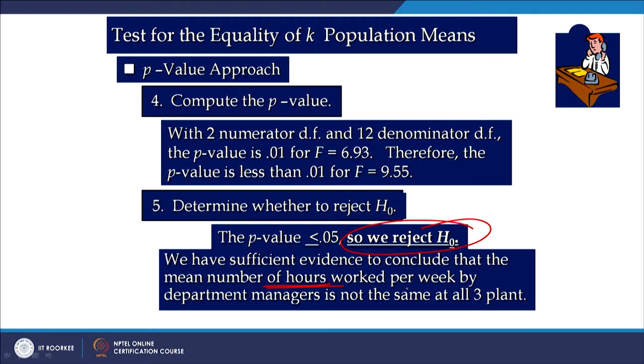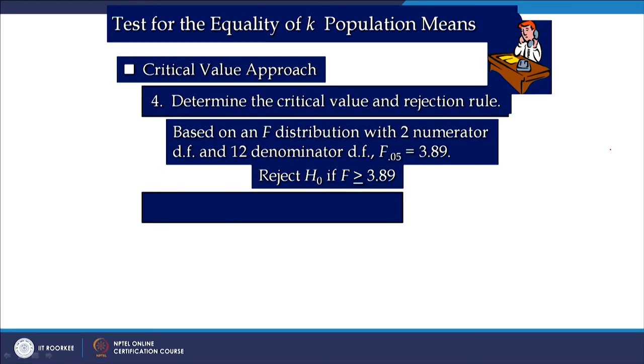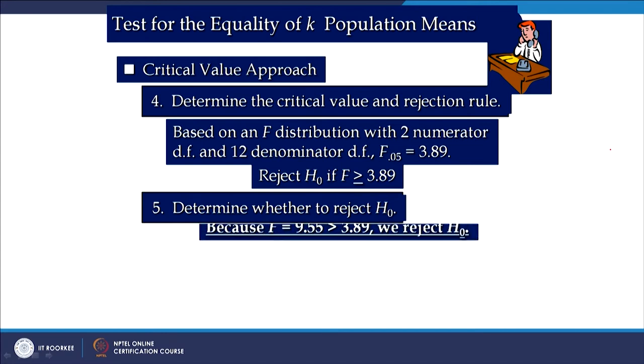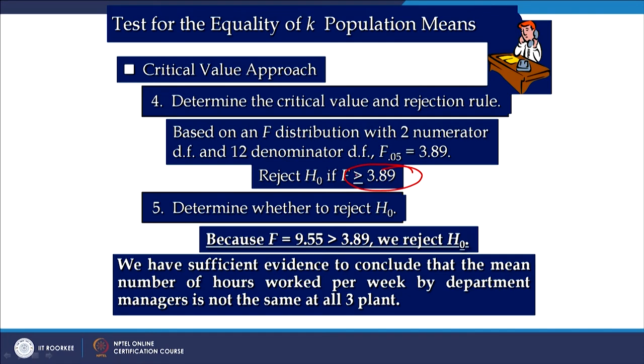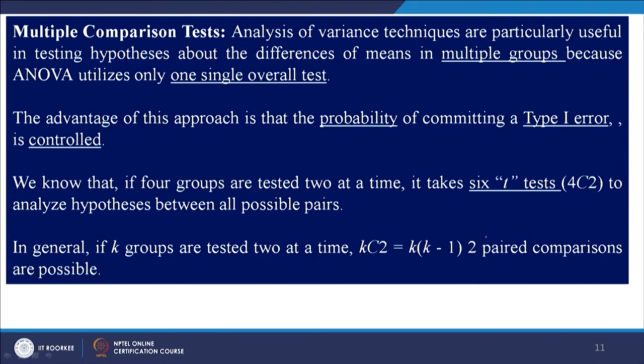This is a simple question you can work out using Minitab or any other software. You can also solve it using the critical value approach — the table value versus the calculated value of 9.55 — and we reject the null hypothesis. Now let us look at multiple comparison tests. ANOVA tells us whether a significant difference exists amongst groups, but it does not tell us between which two groups or which three or more groups the significant difference exists.